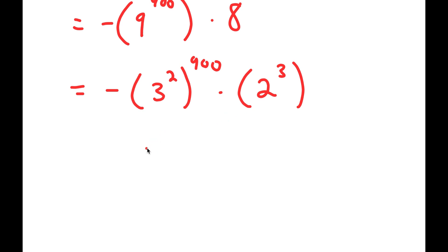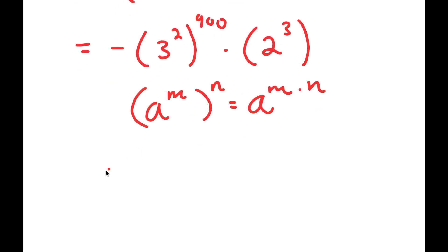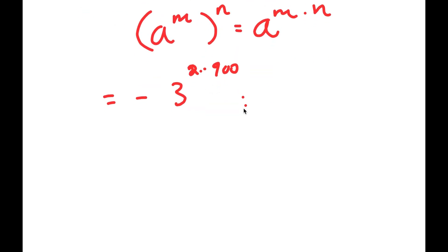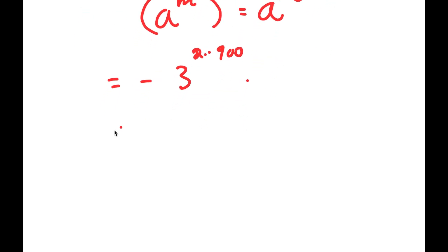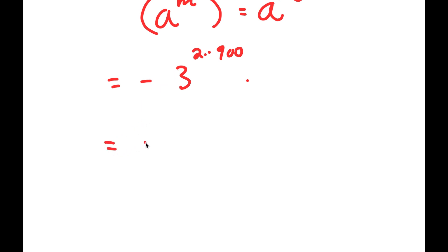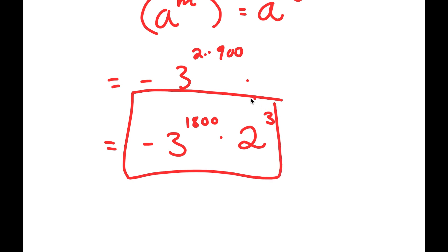Now from here, if I have something in the form a to the power of n, this is equal to a to the power of n times n. So three to the power of two to the power of nine hundred is going to equal three to the power of two times nine hundred, and two to the power of three we just leave alone. Two times nine hundred is one thousand eight hundred, so now I get negative three to the power of one thousand eight hundred. This is my answer to this problem.